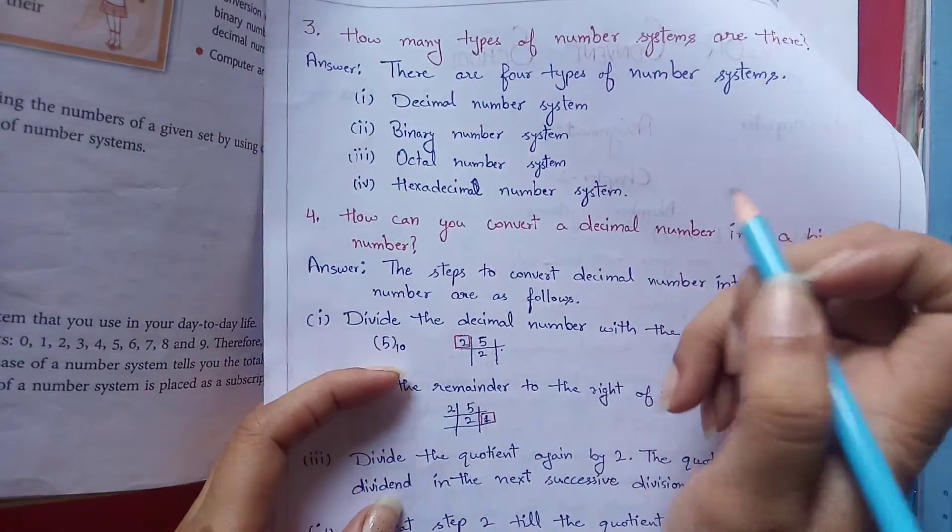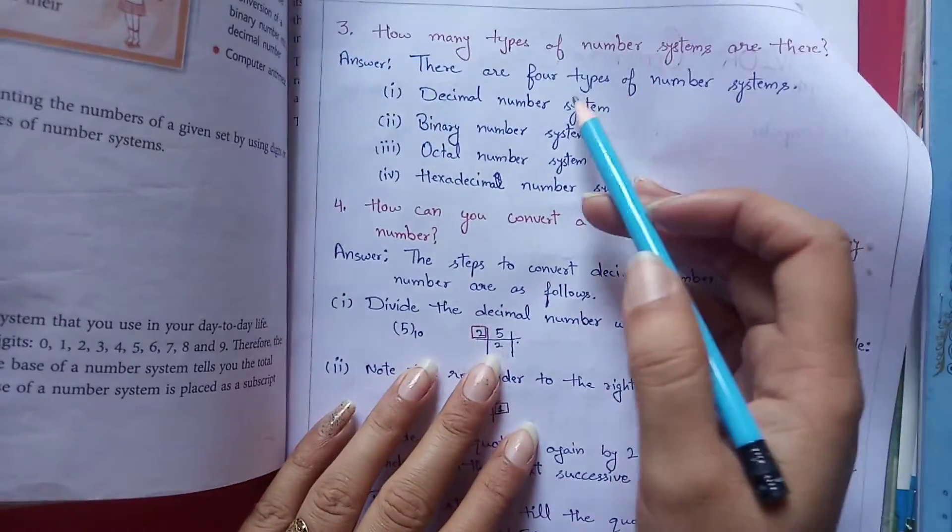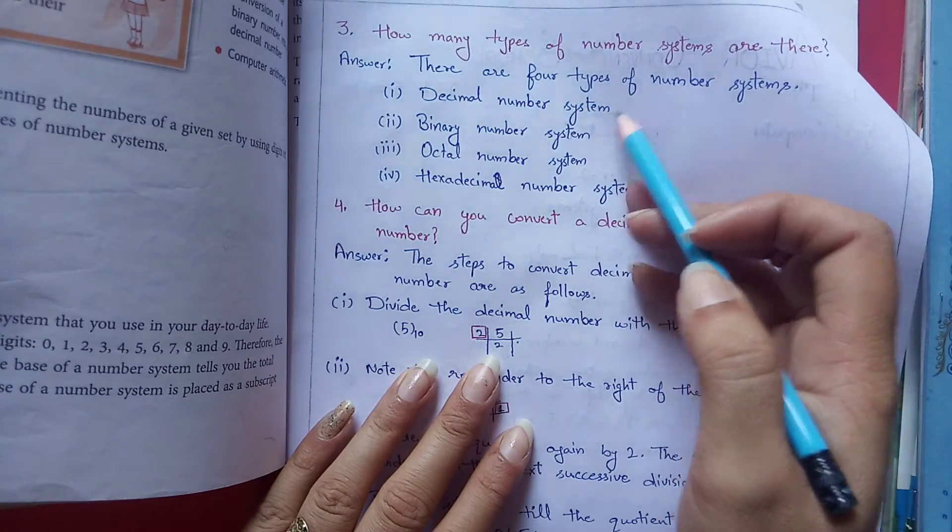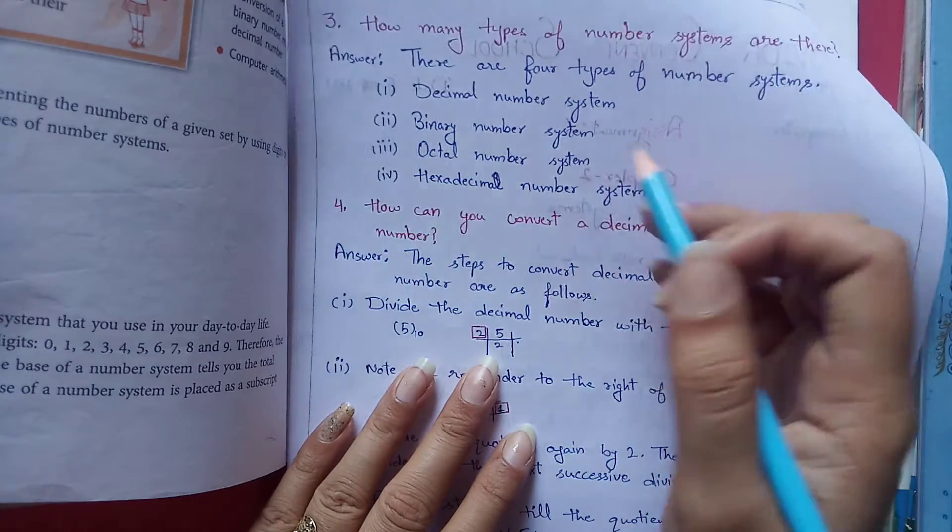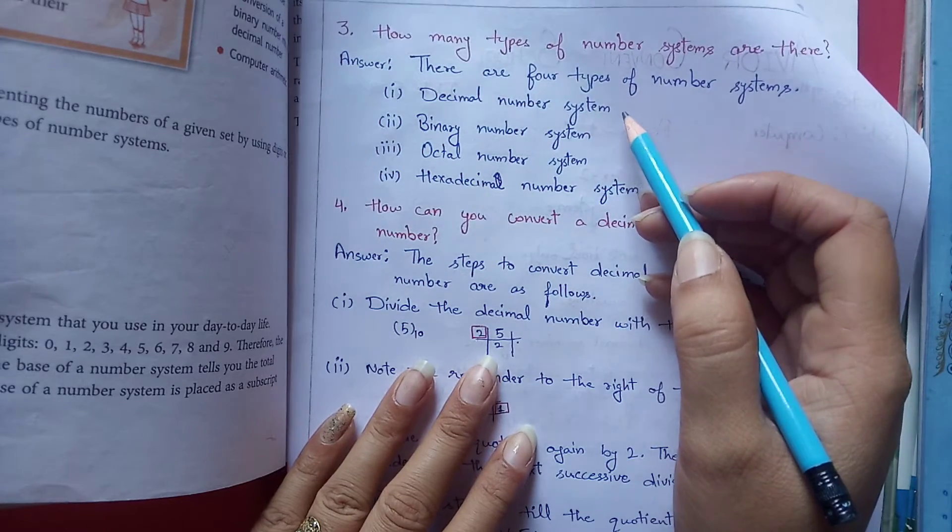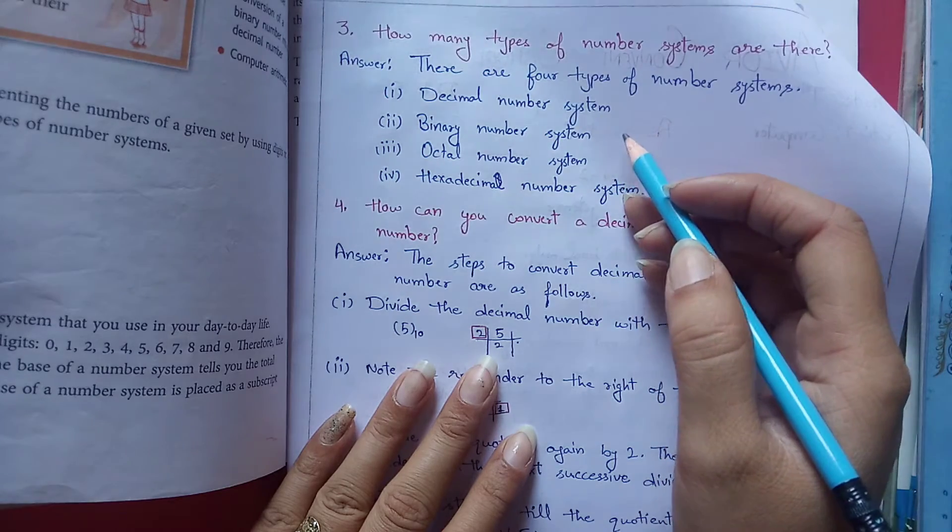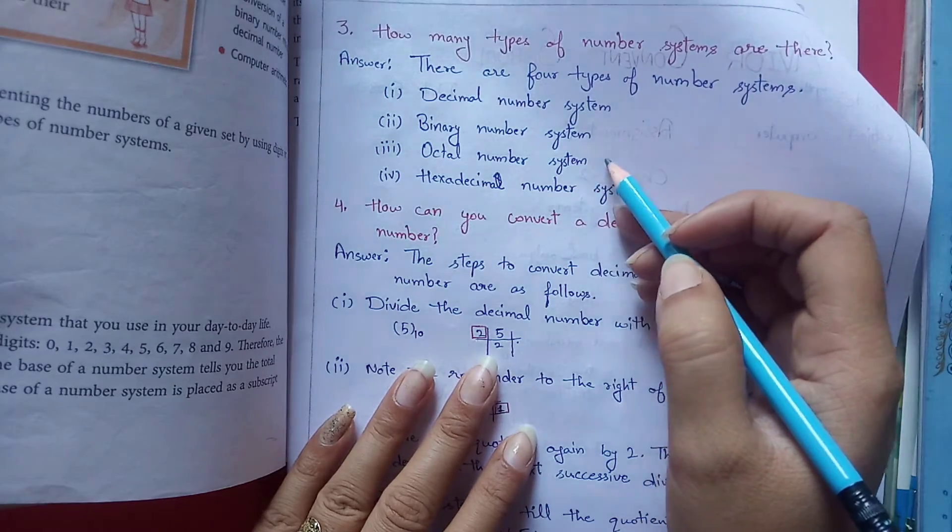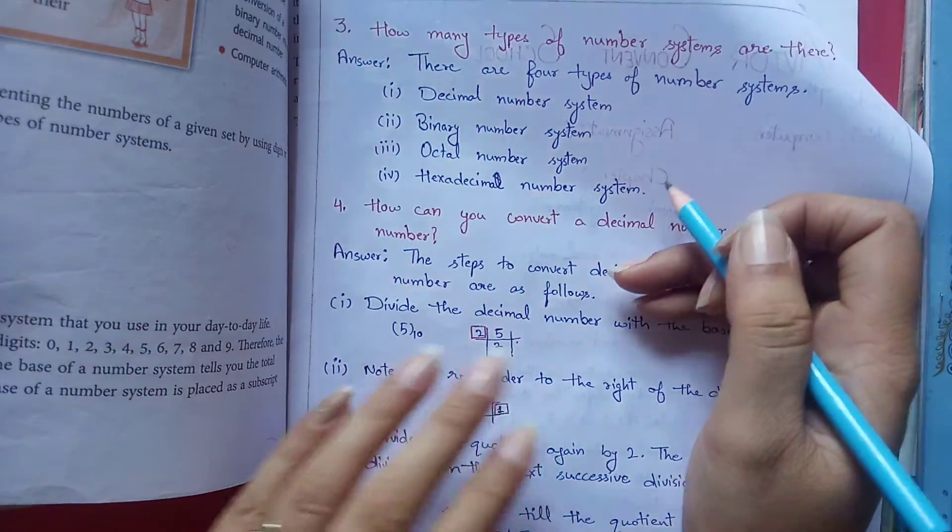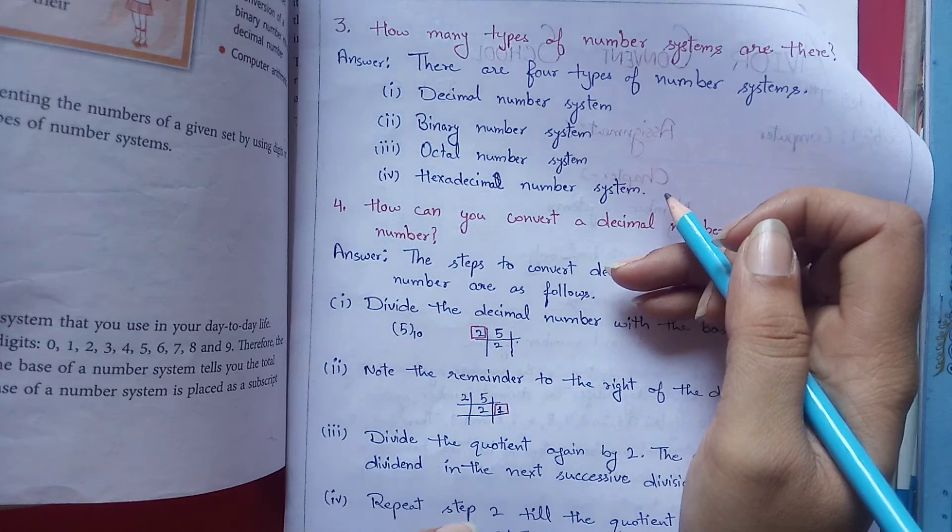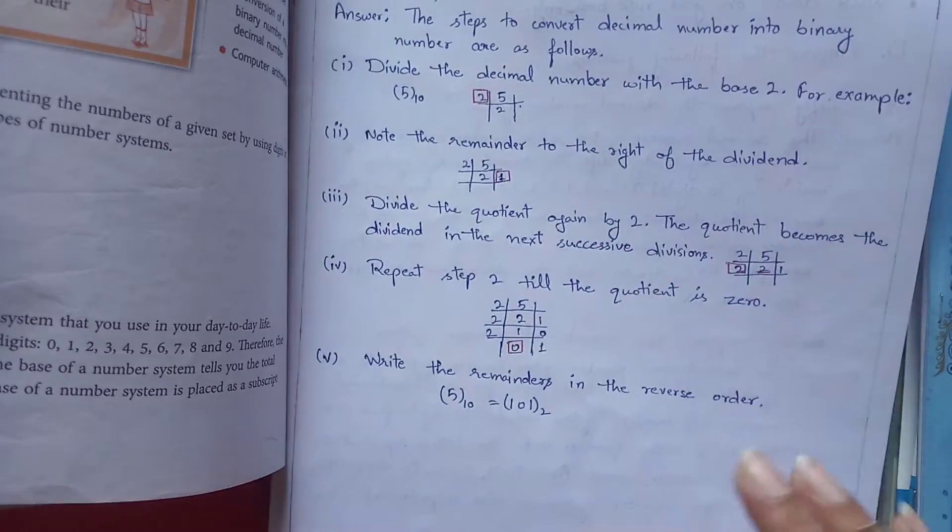Third question is how many types of number systems are there? We have in this chapter 4 types of number systems: first is decimal, second is binary, third is octal, and fourth is hexadecimal. Decimal base is 10, digits are 0 to 9. Binary base is 2, digits are 0 and 1 only. Octal base is 8, digits are 0 to 7. And hexadecimal base is 16, digits are from 0 to 9 and 6 letters from A to F.